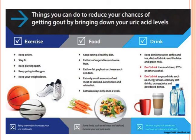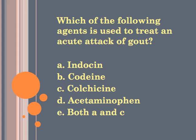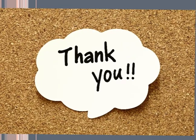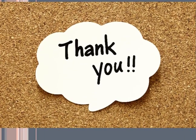To reduce your chances of getting gout, exercise is obviously good, eating a healthy diet, and keeping yourself well hydrated. Which of the following agents is used to treat an acute attack of gout? That would be Indocin and colchicine. Thank you for listening and we'll see each other soon.